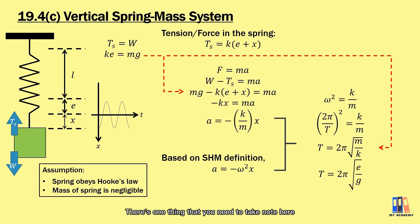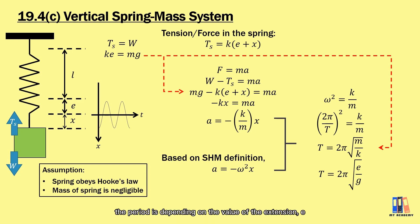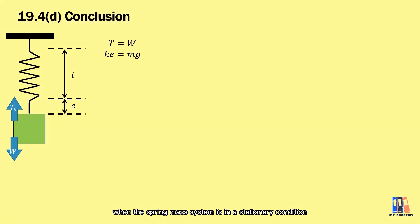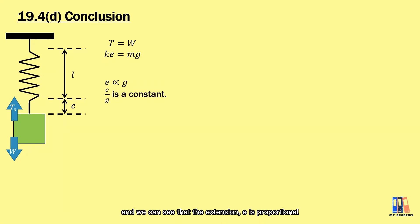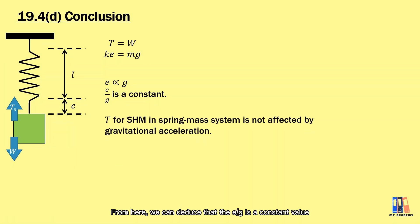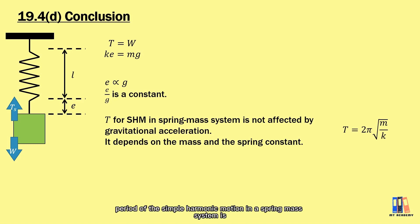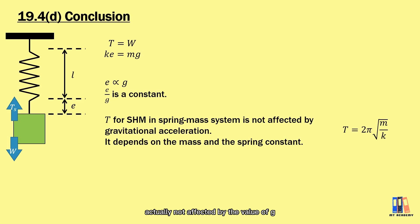There is an important note here. The second formula suggests the period depends on the extension e and gravitational acceleration g. However, recall the equilibrium condition ke = mg, which shows that the extension e is proportional to g. Therefore, e/g is a constant value, meaning the period of simple harmonic motion in a spring-mass system is not affected by the value of g.